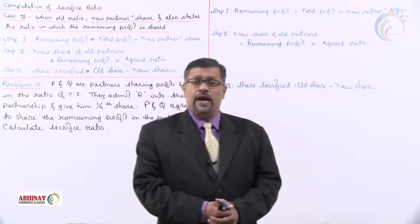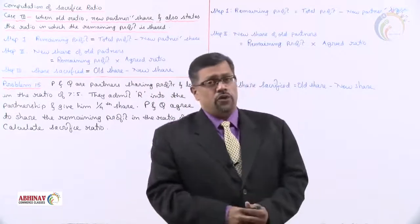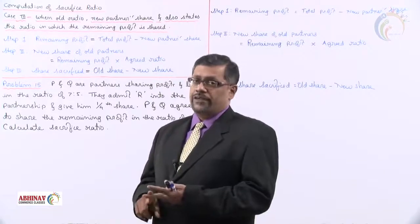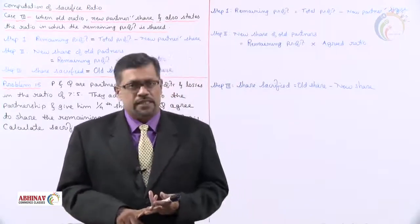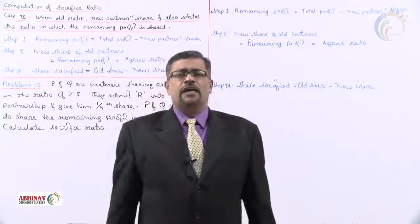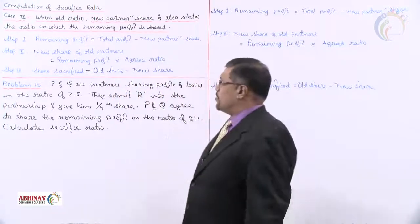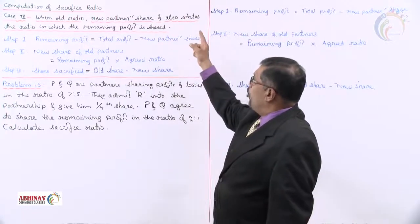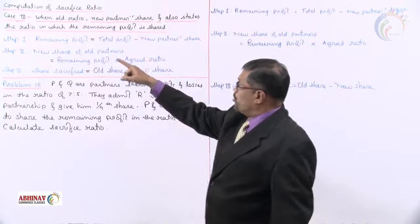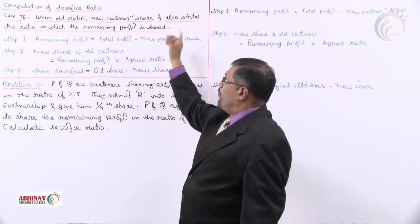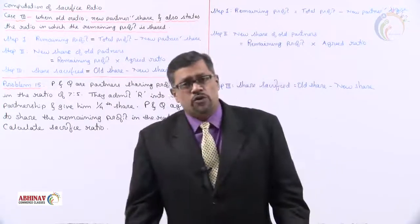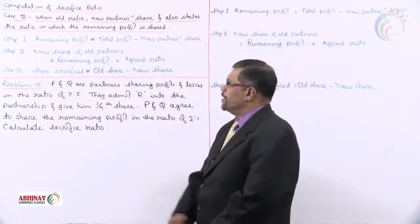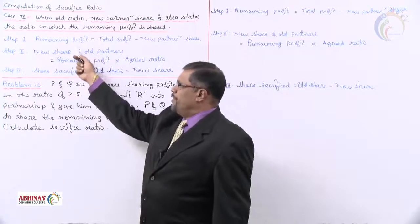In the last session we learned Case 2 of sacrifice ratio, wherein old share and new share of the old partners are given. In this session, let us start with Case 3, where the old ratio, the new partner's share, and also the ratio in which the remaining profit is shared — what we call the agreed ratio — is given.